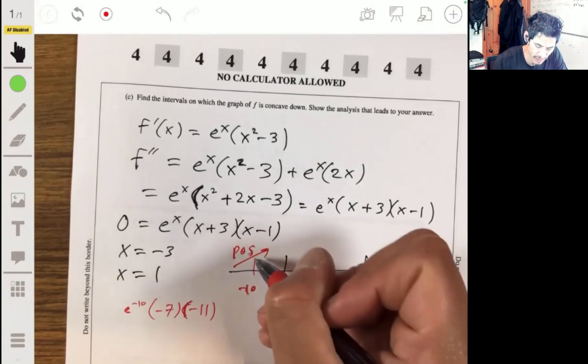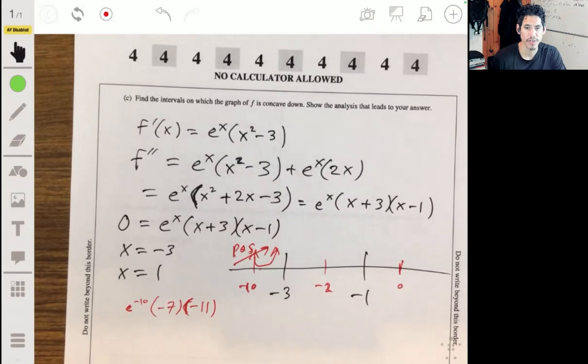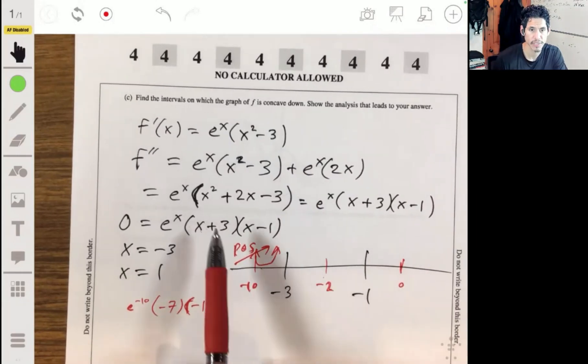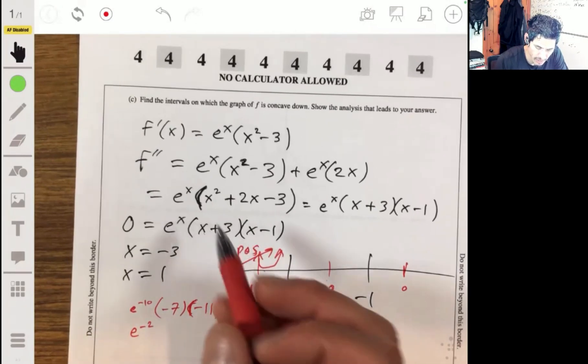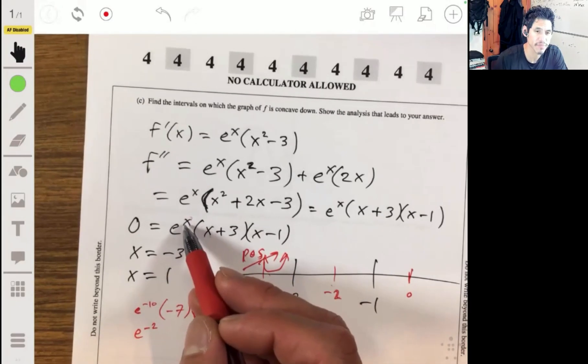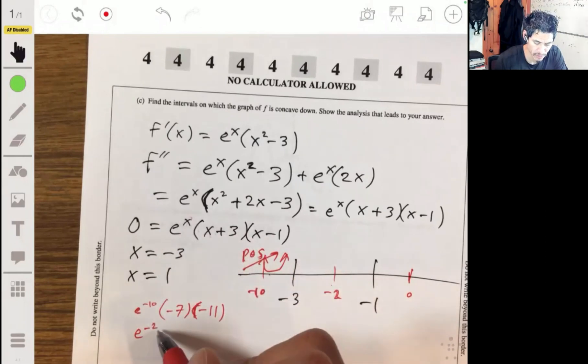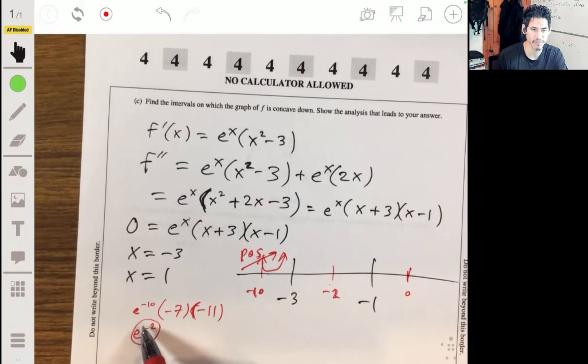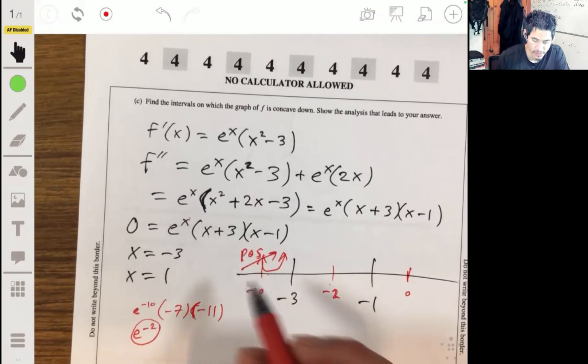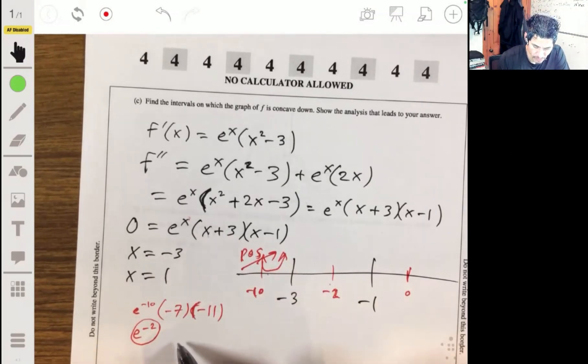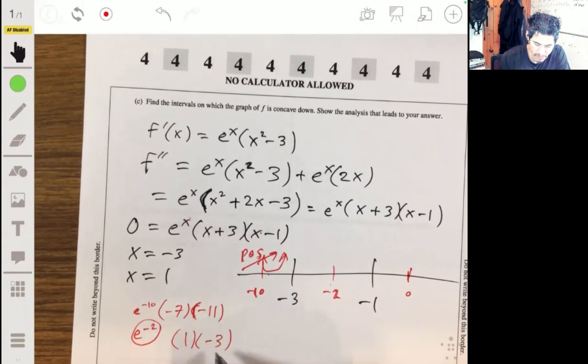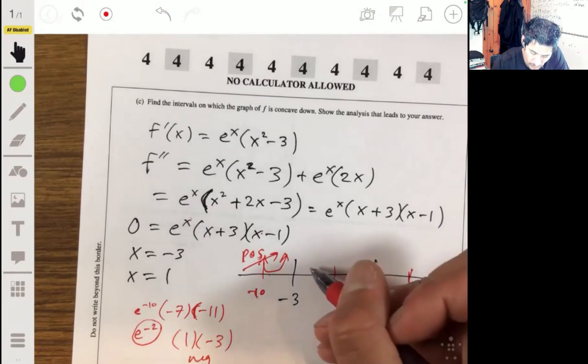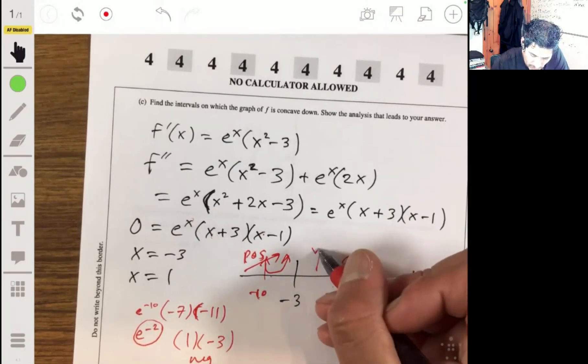So I should put like a concave up actually. Positive there. Let's now check negative 2, plug it into here, e to the negative 2. And this is always going to be positive. So we don't really have to check anymore. Don't get thrown off and don't make the silly mistake that this could be negative. It's always going to be positive. So negative 2 into there will be positive 1, negative 2 into there, negative 3. So we have positive times a negative, so we have a negative. So it's concave down here.